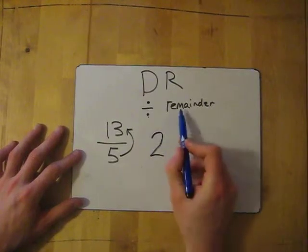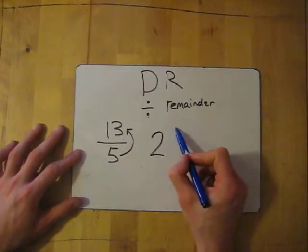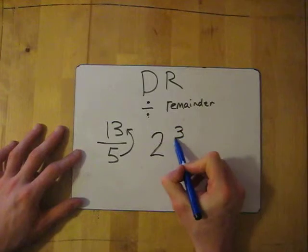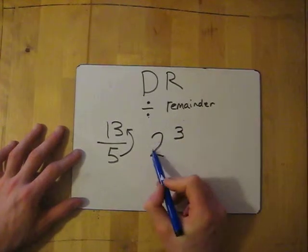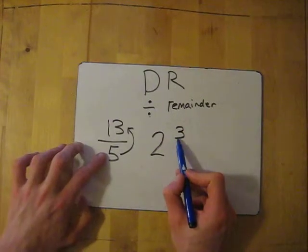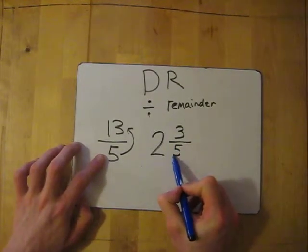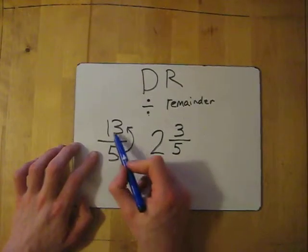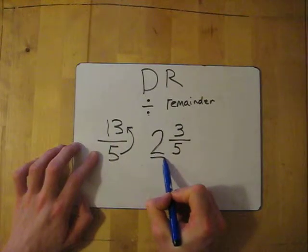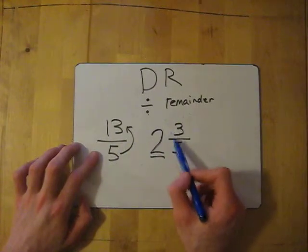The remainder is 3, so the 3 becomes the top part of the next fraction. We've got 2 remainder 3, and the bottom part of the mixed number always stays the same—it's 5. So dividing 5 into 13 gives me 2 wholes, and the remainder is the top part of the fraction in the mixed number.